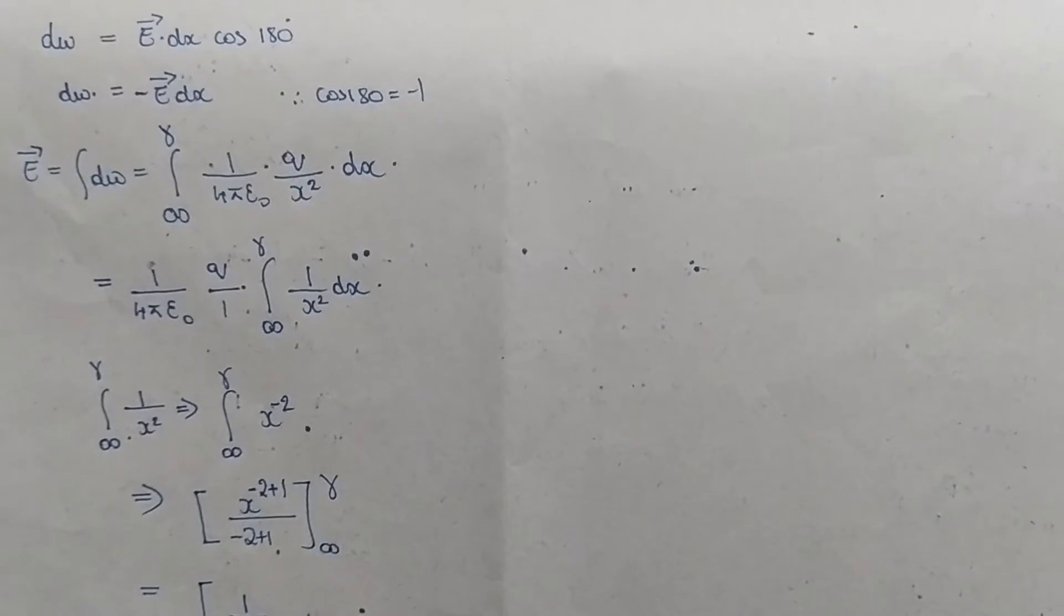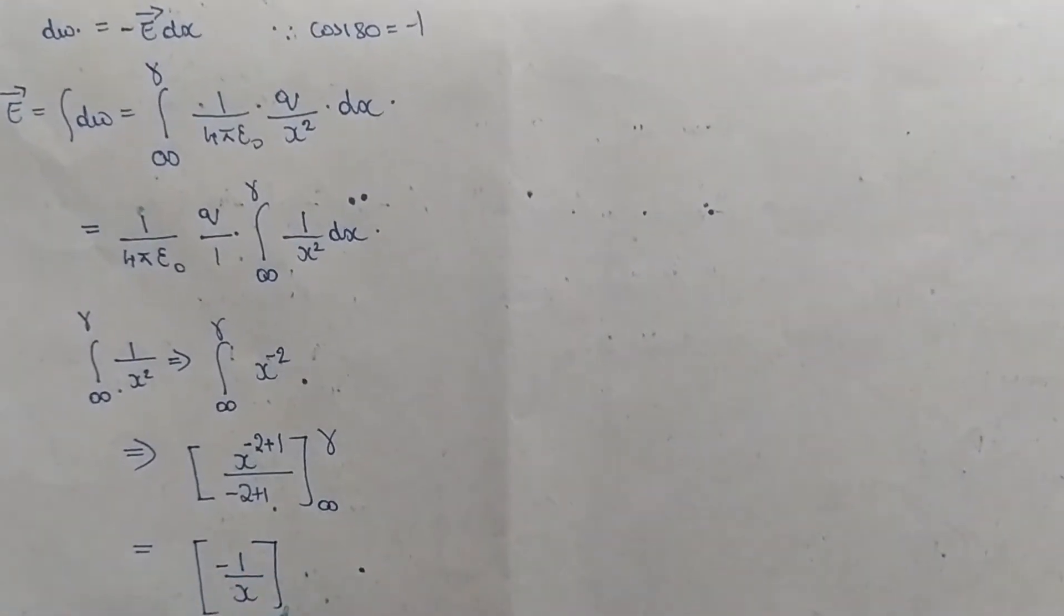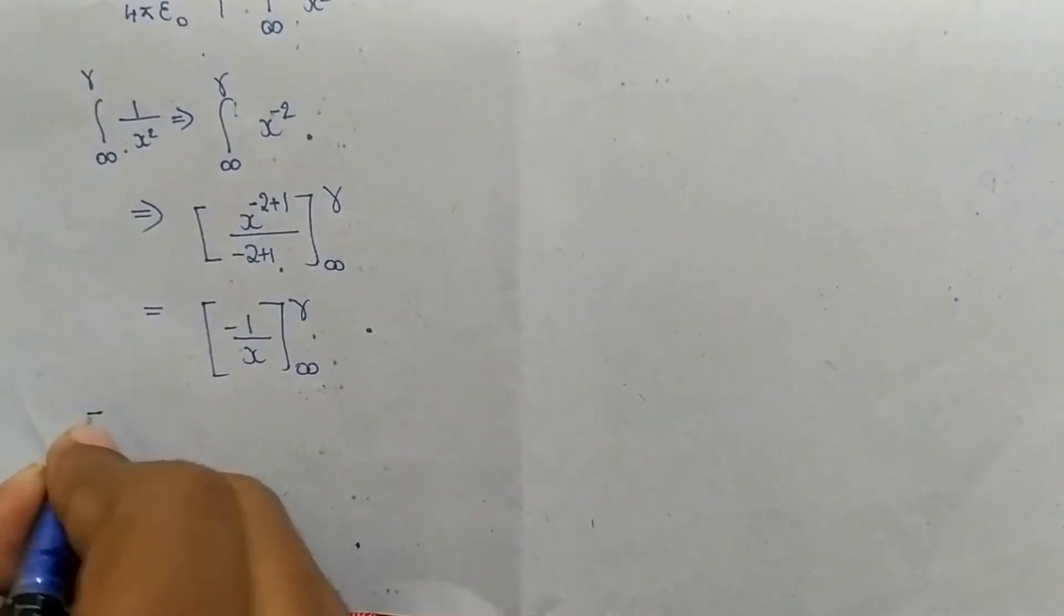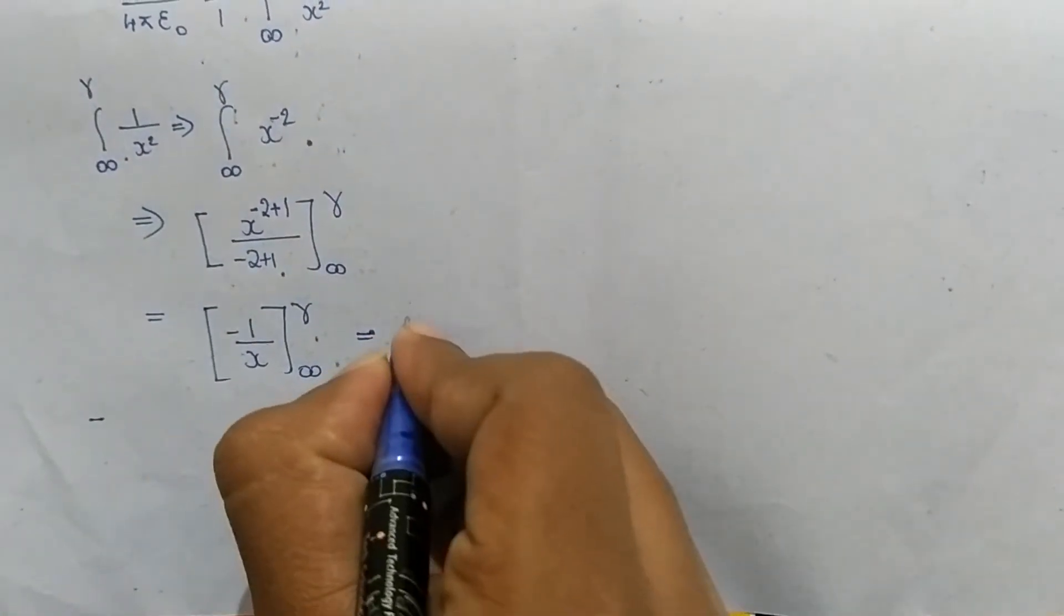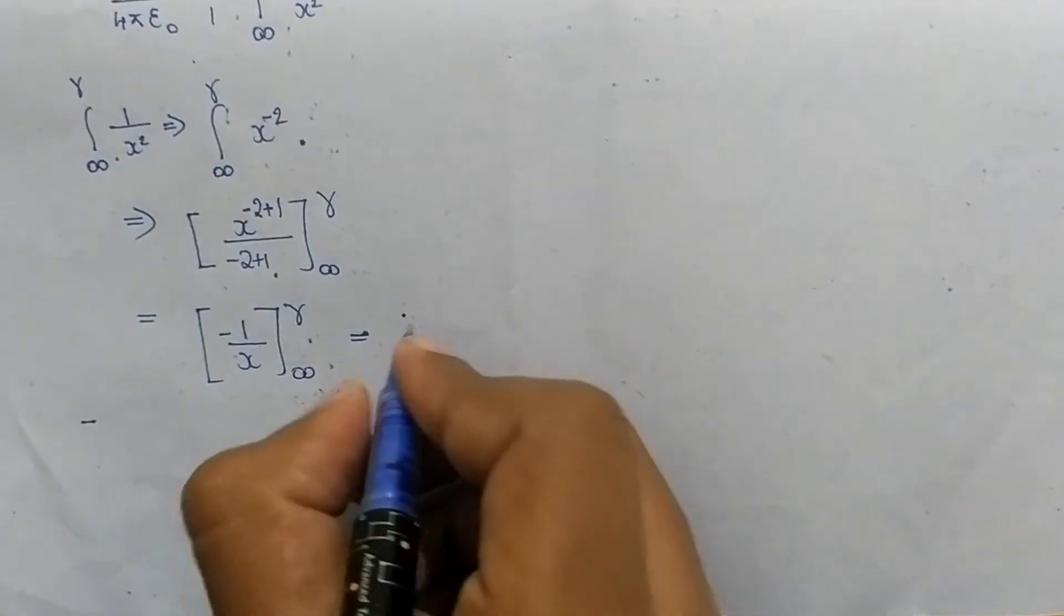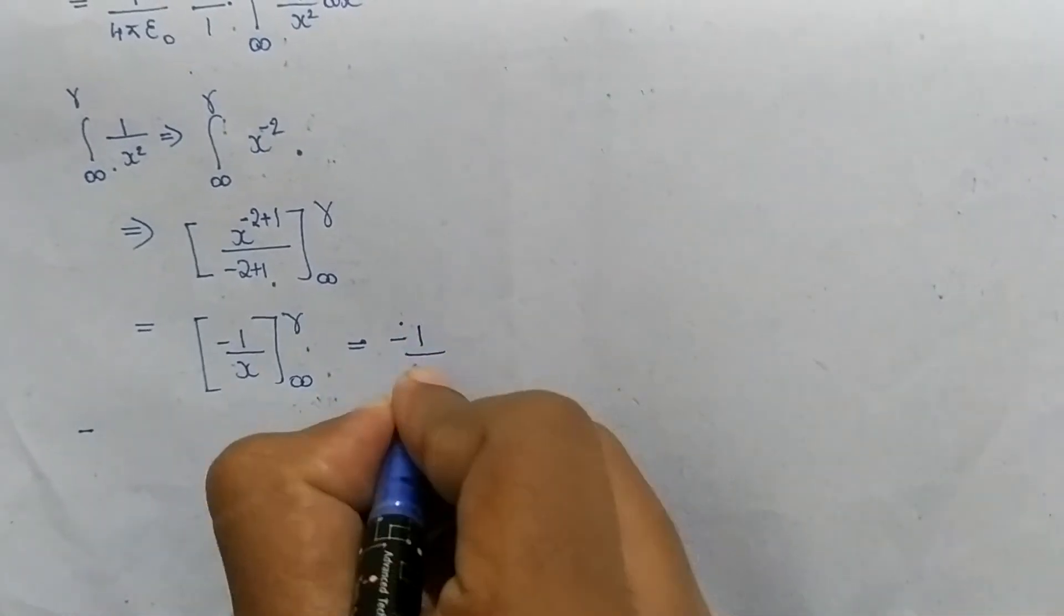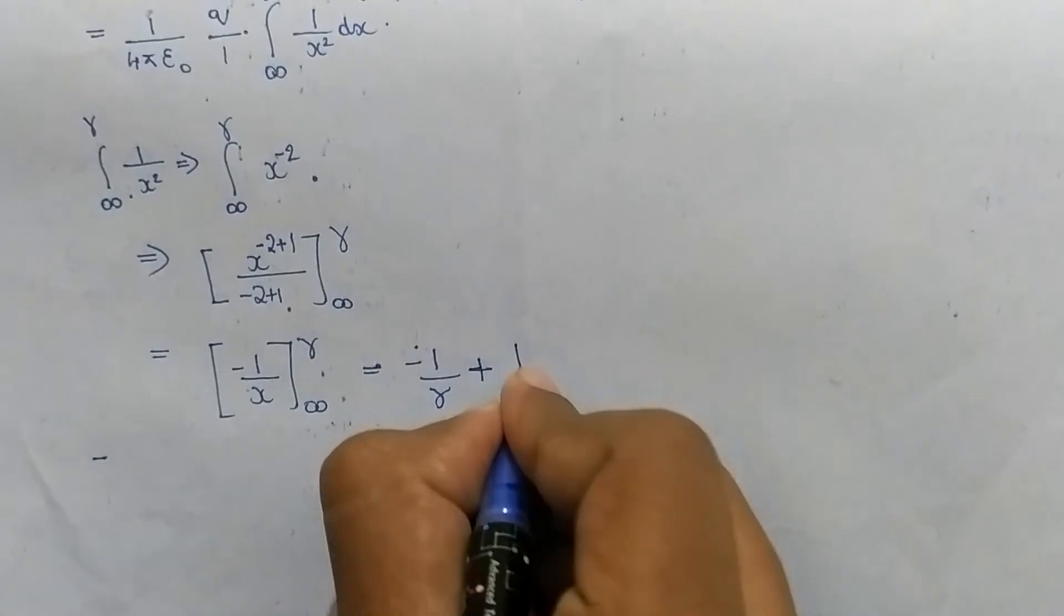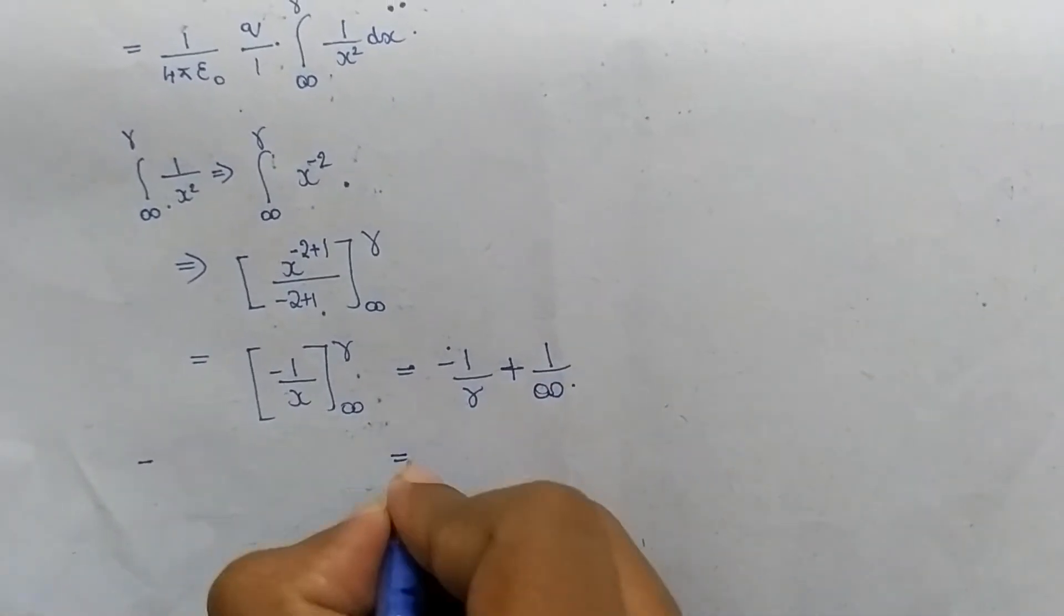This is equal to, substituting higher limit minus lower limit, -1/r minus (-1/∞). 1 by infinity is 0, which gives 1/r plus 0.